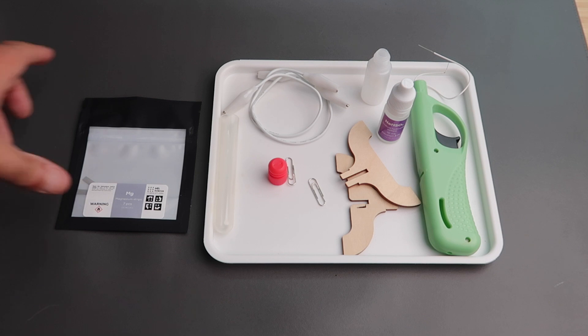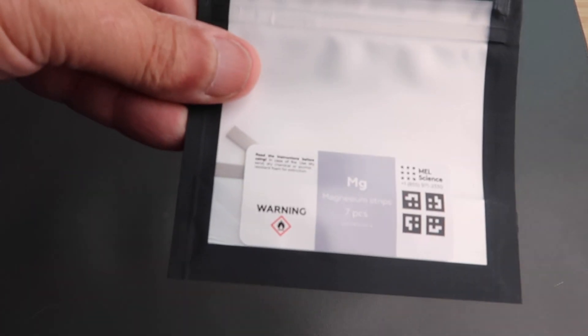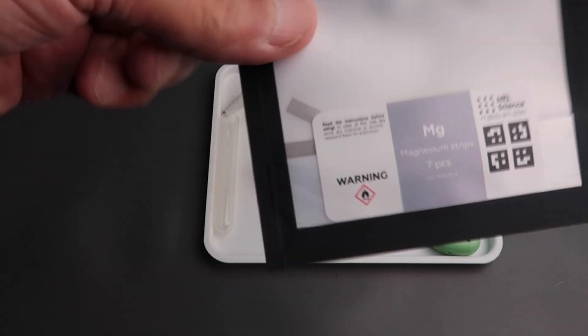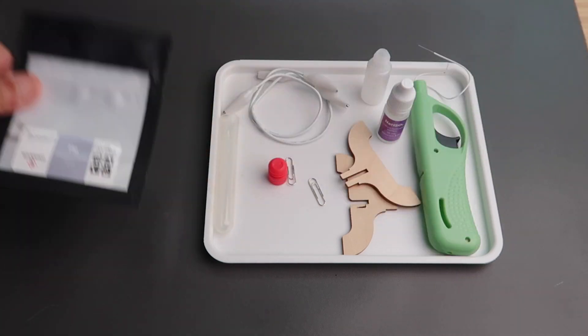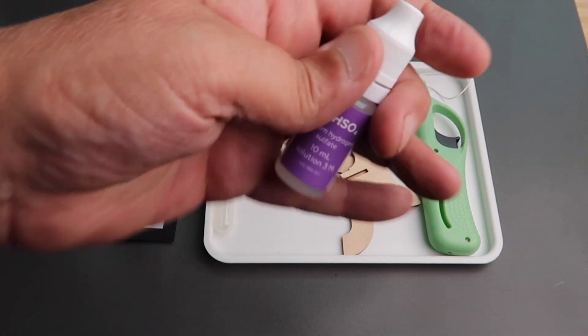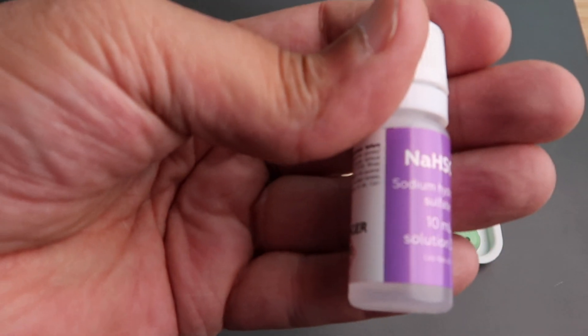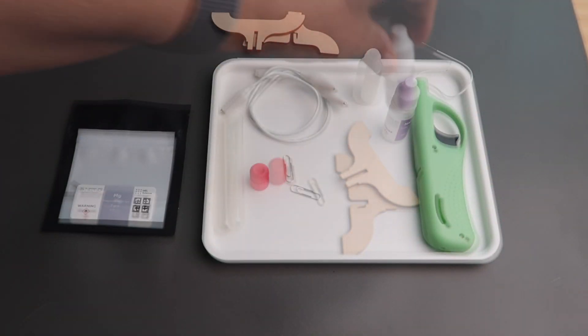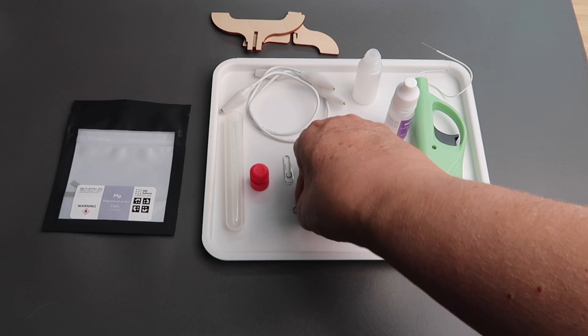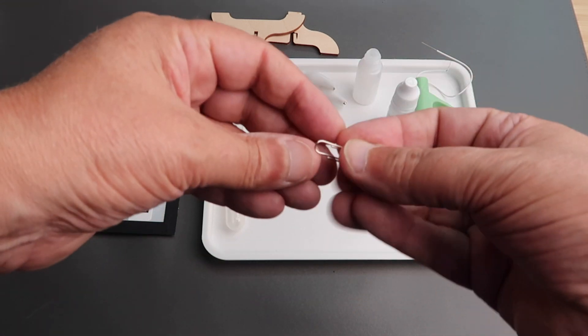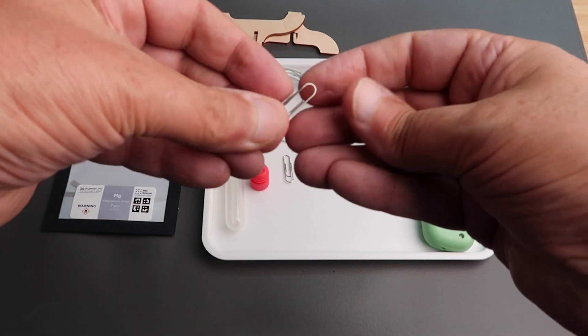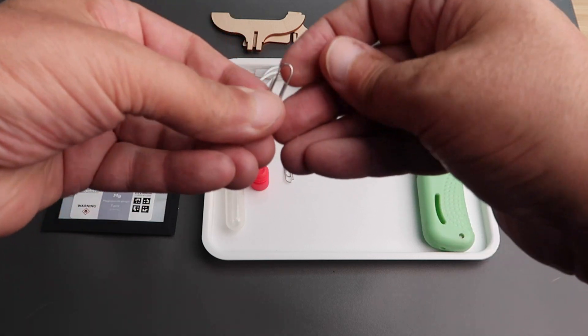Now we're going to make some liquid fuel. We're going to use a magnesium strip and sodium hydrogen sulfate. First of all we're going to construct the firing system where basically we're going to generate a spark which will ignite the fuel.